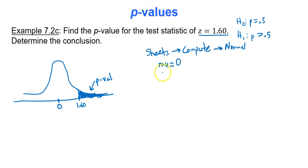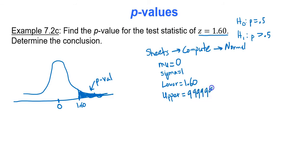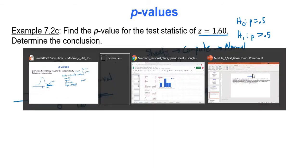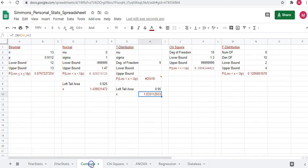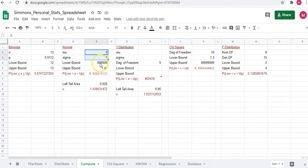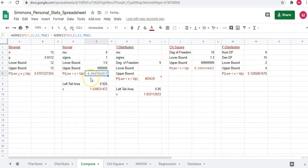For z, mu is 0 and sigma is 1. The lower bound — where does the shading start? At 1.60. Where does the shading stop? At infinity, so you write 6 nines. To find the p-value from the test statistic, go to the compute tab, to the normal region, with mu = 0 and sigma = 1. Our lower bound is 1.60 and our upper bound is 6 nines. This gives a p-value of 0.0548. P-values are usually rounded to 4 decimal places.